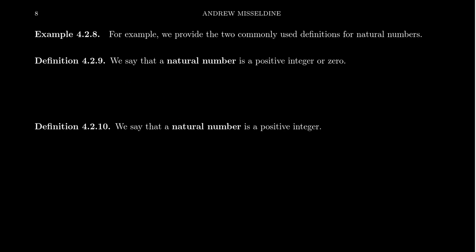And the one I see the most often is this fight between what is a natural number. So I'm going to present to you two definitions of what a natural number is. Definition 4.2.9, we say that a natural number is a positive integer or zero. Now an alternative definition for natural number is that this will be definition 4.2.10. We say that a natural number is a positive integer.